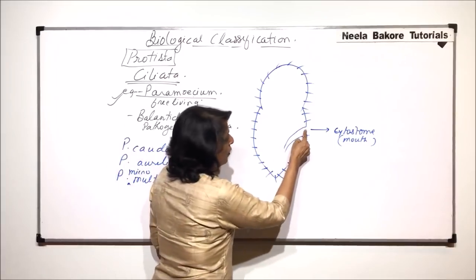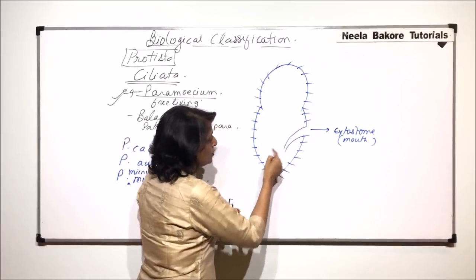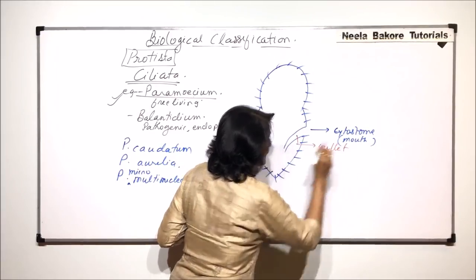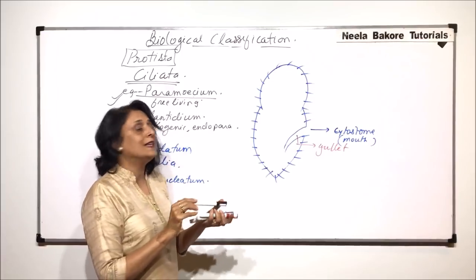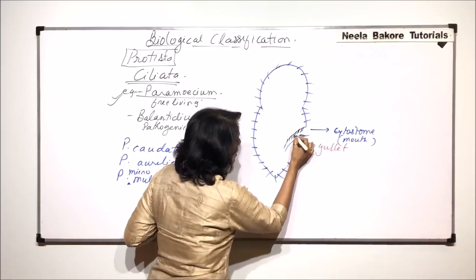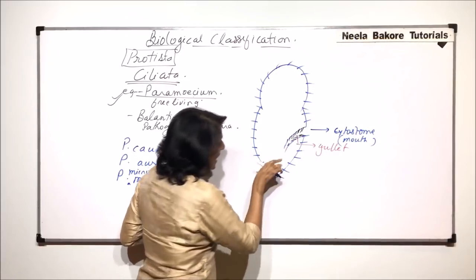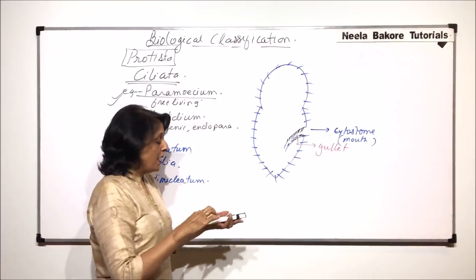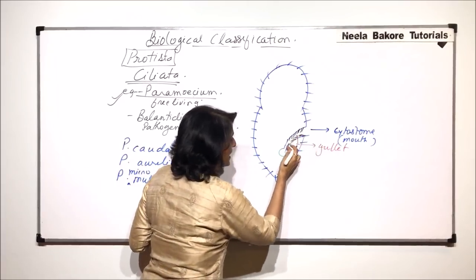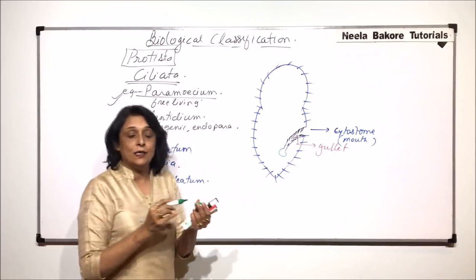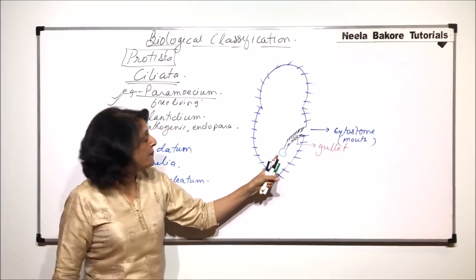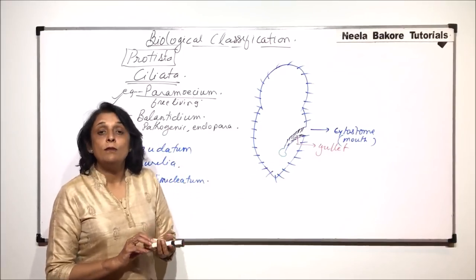The mouth or cytostome leads into a tube which is called the gullet. This gullet is also lined by cilia, and all these cilia are inwardly directed. At the lower end of this tube, there is a food vacuole which is formed. So when the food is taken in, it is packed into a vacuole-like structure at the other end of this gullet.